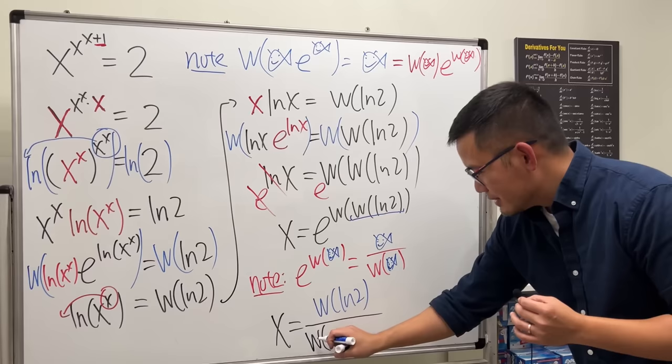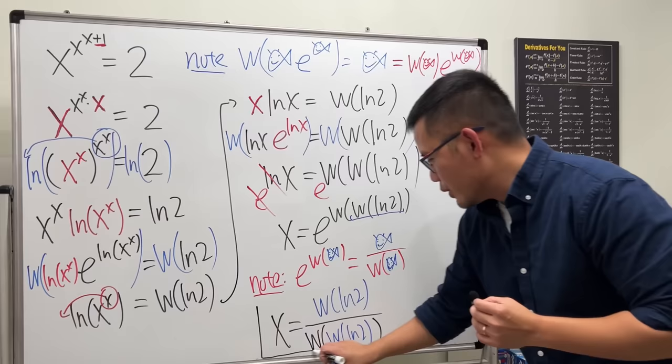So, it's the Lambert W function of the Lambert W function of ln 2, like this. I think this is like the coolest answer of an equation I've ever seen before. Yes!